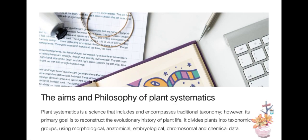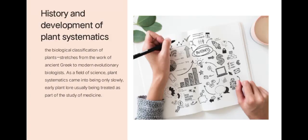The aims and philosophy of plant systematics: plant systematics is the science that encompasses traditional taxonomy. Its primary goal is to reconstruct the evolutionary history of plant life, dividing plants into taxonomic groups using morphological, anatomical, embryological, chromosomal, and chemical data. The biological classification of plants stretches from the work of ancient Greeks to modern evolutionary biologists. As a field of science, plant systematics came into being only slowly, with early plant studies usually being created as part of medicine.